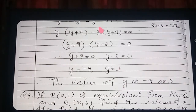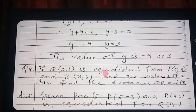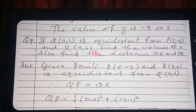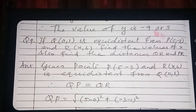These are all different types of sums, so I'm not giving homework — same sums only can be given as homework. Next is question 9: Q(0,1) is equidistant from P(5, −3) and R(x, 6). Find the values of x. Q is equidistant from P and R means QP equals QR.